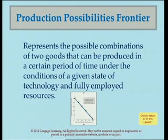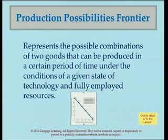Production takes place in a given period of time — maybe a year, a month, or whatever. The two conditions are: we're operating with a given state of technology, so technology cannot be improved; technology remains the same. And fully employed resources — we use all resources, that means capital, labor, entrepreneurship — all of those resources are already used to the maximum. There are no excess resources that we can still use to produce combinations of the two goods.